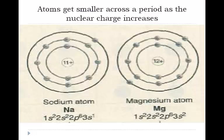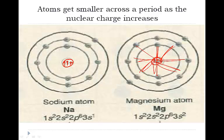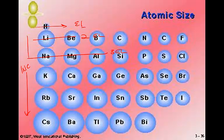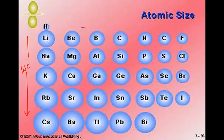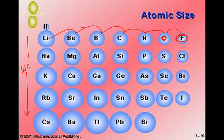Atoms get smaller as they move across the period. The nuclear charge increases — from sodium with 11 protons to magnesium with 12 protons — so there's more attraction from the nucleus and the atom gets a little bit smaller. We can see that lithium is larger than beryllium, boron, carbon, nitrogen, oxygen, and fluorine. So atomic size decreases as we move across the period.